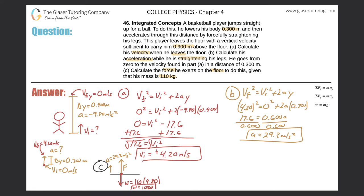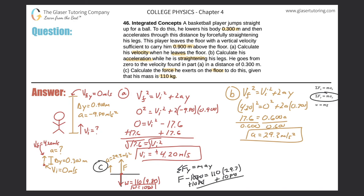Using the sum of forces in the y-direction: ΣFy = ma. The unknown upward force F minus the weight (pointing down) equals mass times acceleration. So: F − 1080 = 110 × 29.3. Adding 1080 to both sides to solve for F.